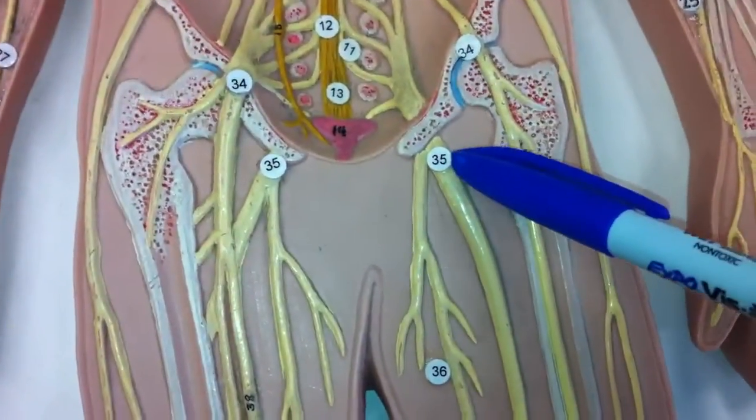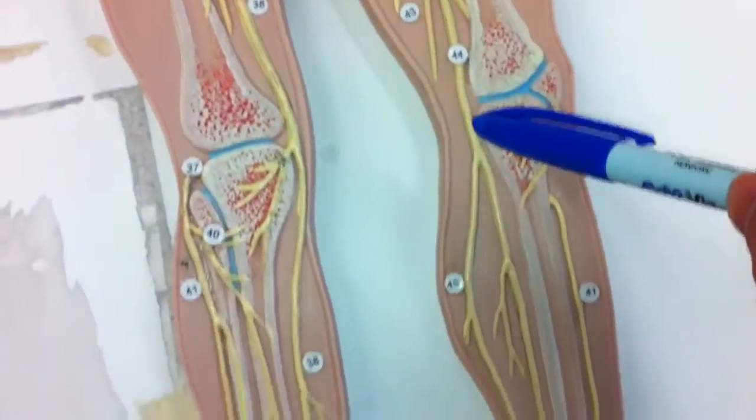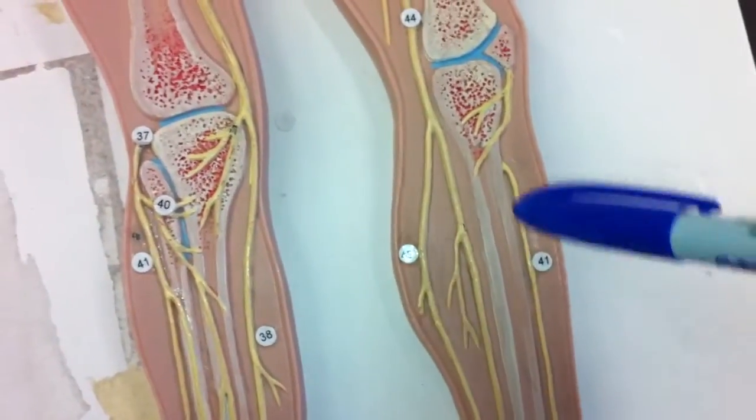And then behind, you'll see this big one will actually be the sciatic, which will split off into the sural, which will be the calf, the tibial, and then the fibular. And that's about it.